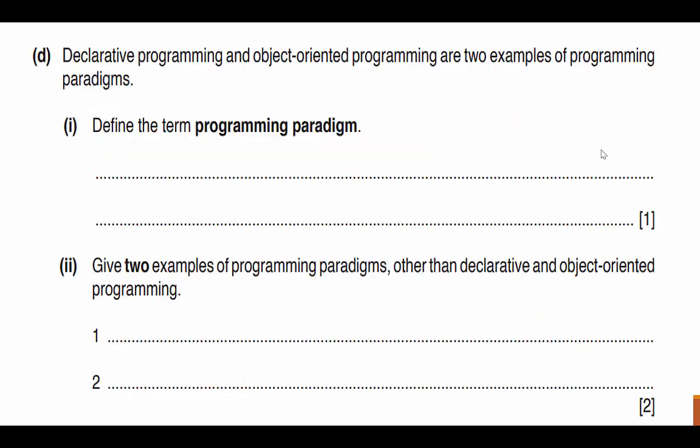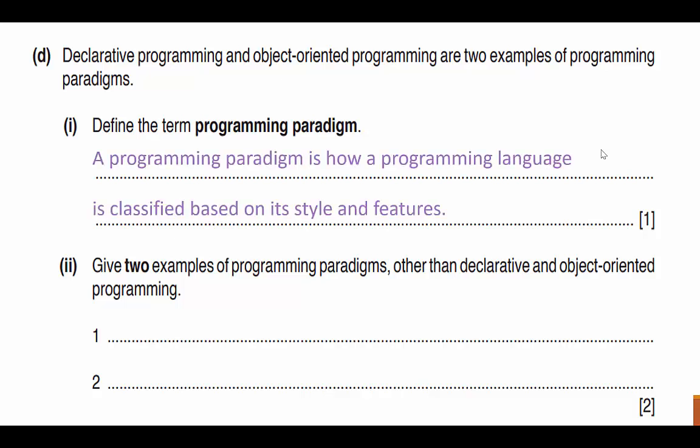It says declarative programming and object-oriented programming are two examples of programming paradigms. Define the term programming paradigm. Well, you should know from studying that a programming paradigm is how a programming language is classified based on its style and features. Does it follow a series of steps? If so, it's procedural or imperative.